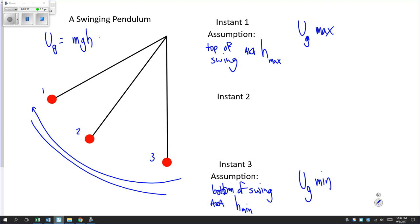And at instant 2, it's somewhere in the middle. It's less than instant 1, it's more than instant 3. We certainly can't quantify it. Qualitatively, we can just say it's more than 3, less than 1.